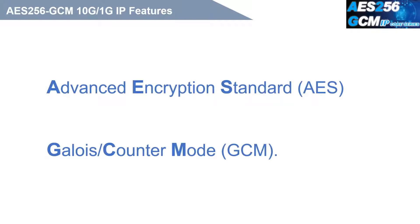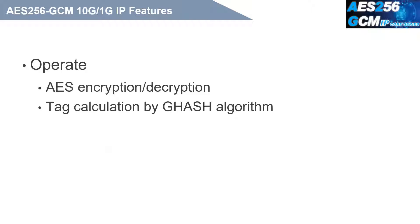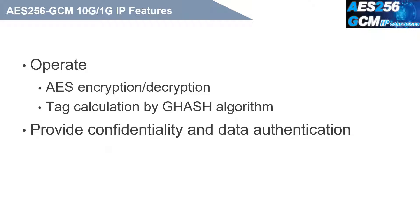AES-256-GCM IP Core implements the Advanced Encryption Standard in Galois Counter Mode. There are two main operations in AES-GCM: encryption, decryption, and tag calculation by the G-Hash algorithm. It can provide confidentiality and data authentication by using Additional Authenticated Data (AAD) and an authentication tag, so it is widely used for Authenticated Encryption with Associated Data (AEAD) applications.